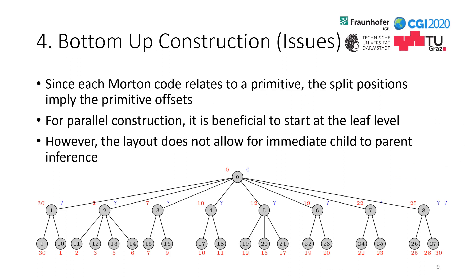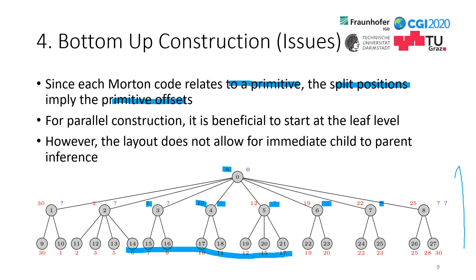Finally, we perform a bottom-up hierarchy construction. Since each Morton code relates to a primitive, the split positions already imply the primitive offsets. Thus we already have the red numbers, the primitive offsets, in place. However, what we do not have at this point are the node-to-children relationships, which are still unclear. For parallel construction it is beneficial to start at the leaf level and work bottom-up, but the layout does not immediately allow child-to-parent lookups.